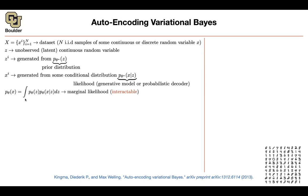You integrate Z out to get the marginal likelihood, and this is the quantity you take the log of and try to maximize. But there's a problem: this is intractable. If the likelihood is a neural network, taking its integral with respect to a prior distribution is a nightmare. If the prior is a normal distribution, this is intractable to compute.